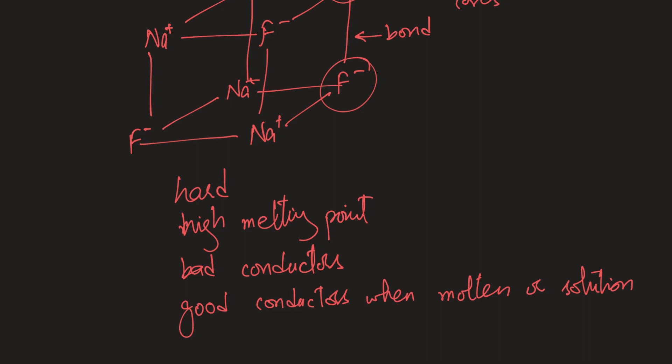And all of these properties are coming from ionic bonds. So if I were to summarize this, I can see that they are hard, they have high melting point because there are strong forces that you need high energy to break. They're bad conductors because ions are not free, and they're good conductors when molten because ions are free. And that is how ionic compounds are made, how they behave, and their properties.